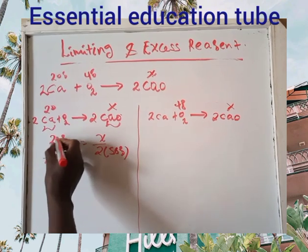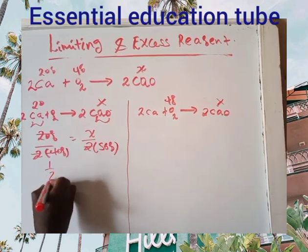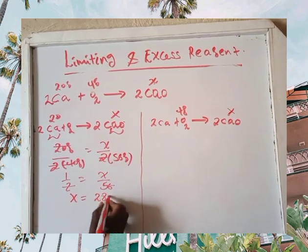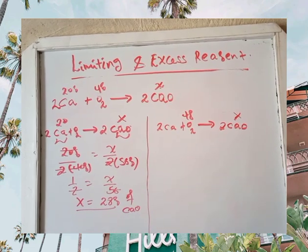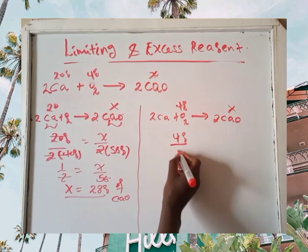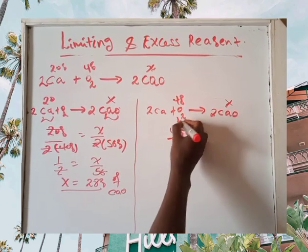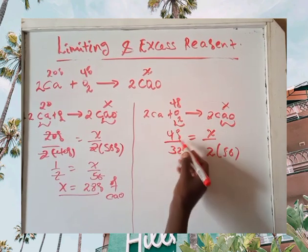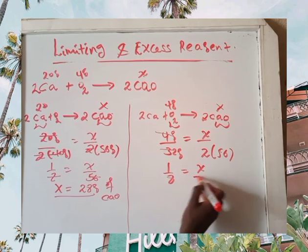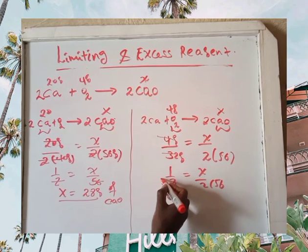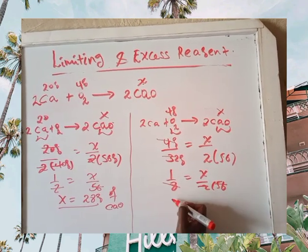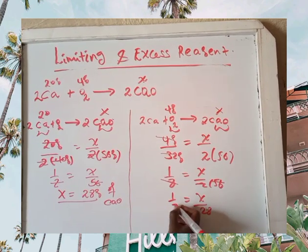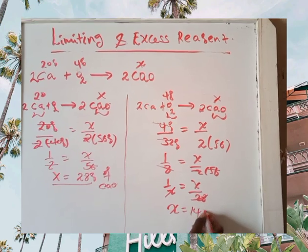The molar mass of calcium oxide is calcium plus oxygen, which equals 56 grams per mole. So we have 1 over 2, which is equal to x over 56. Solving: 2x equals 56, so x equals 28 grams of calcium oxide produced from 20 grams of calcium metal.